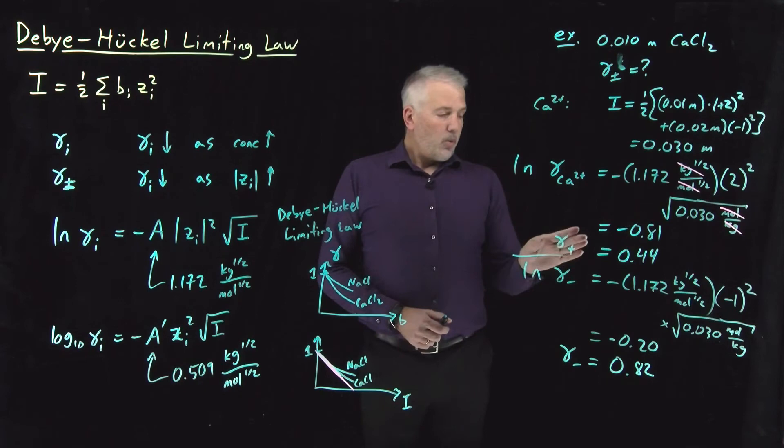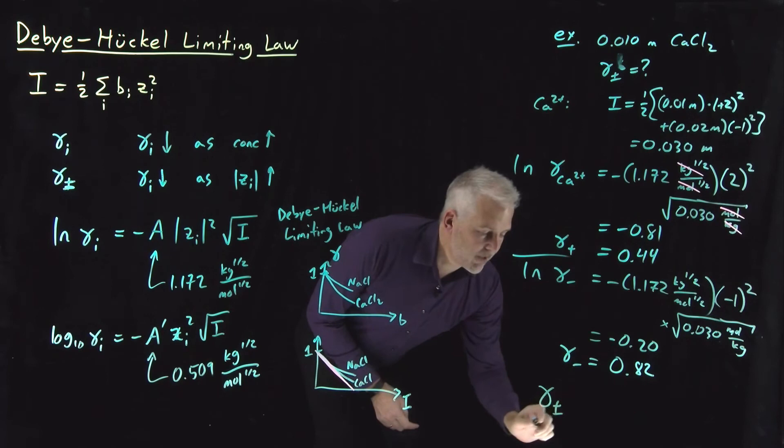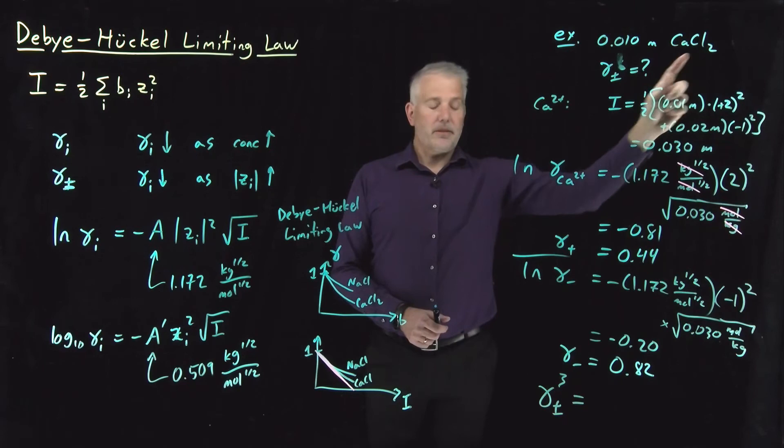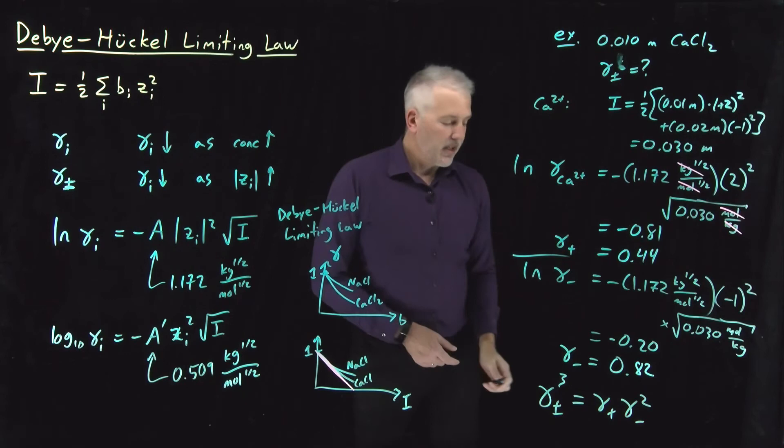We're not done. That's the activity of the cation, the activity of the anion. What we're interested in is the mean ionic activity. So gamma plus minus to the third, because I have a total of three ions in my salt, is activity of the cation to the 1, activity of the anion to the 2, because I have a 1 to 2 salt, one calcium ion, two chloride ions.